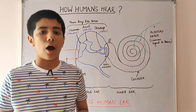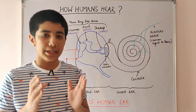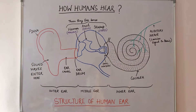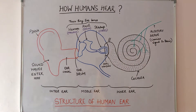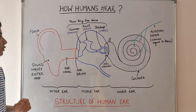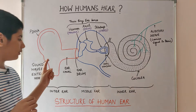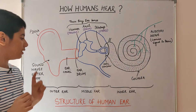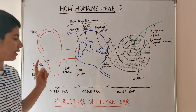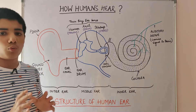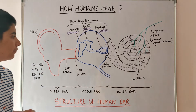Now we will discuss how humans hear. Sound waves enter through the pinna, travel through the ear canal, and then hit the eardrum. The eardrum begins to vibrate.